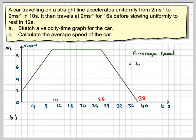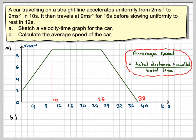Average speed is the total distance travelled divided by the total time. Now the distance travelled on a velocity-time graph is given by the area underneath the graph.